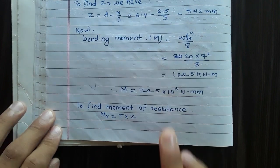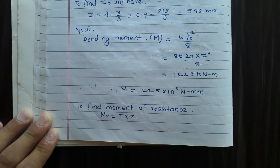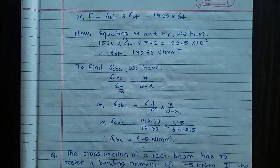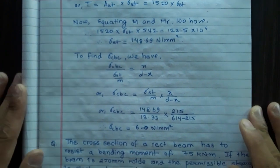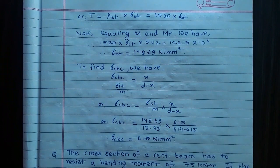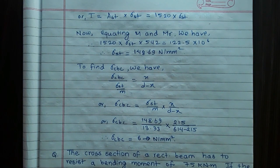To find stresses: MR = T × Z = AST × σST × Z. Equating bending moment and moment of resistance with AST = 1520 mm², Z = 542 mm: σST = 148.69 N/mm². Using the formula σCBC/(σST/M) = X/(D - X), substituting values gives σCBC = 6 N/mm².